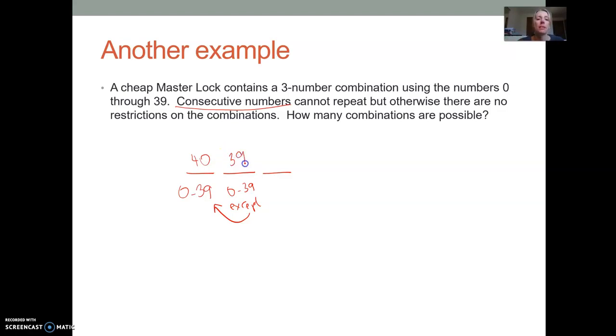And then the third number can be anything except whatever the second number was. So it can be zero to 39, except for whatever the second number was. Now it is allowed. It doesn't say that it can't repeat at all. So if the first number is 1 and the second number is 2, the third number just can't be 2, but it could be 1 again. So there would be 39 possibilities. The counting principle tells us multiply these together. 40 times 39 times 39 is 60,840.